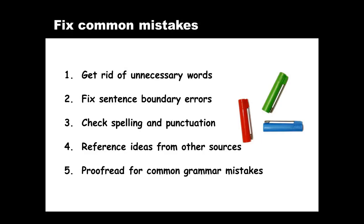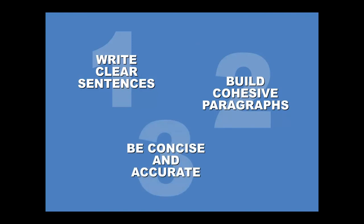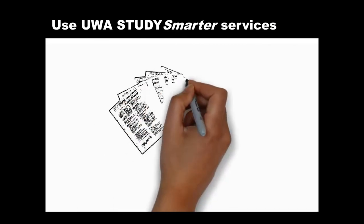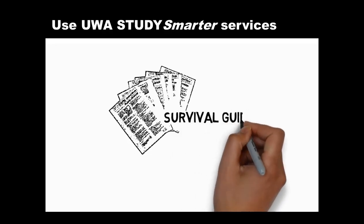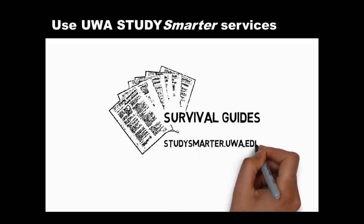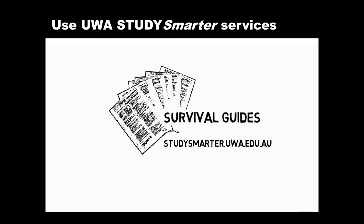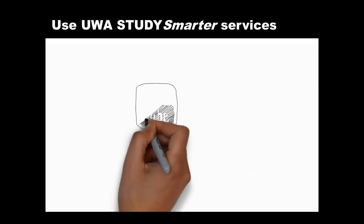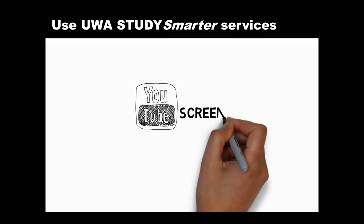In summary, you can make the writing you do for crime and society concise and accurate if you do these things. We hope you've enjoyed this video, the last in a series of three, and that these videos help you write clear sentences, build cohesive paragraphs, and be concise and accurate, so that when you write for crime and society, your papers are easy to read and have impact. There's lots of help available from Study Smarter at UWA. For example, you can download survival guides from our website — these are handy one-page advice sheets on topics that can help you with your studies. You can also get other Study Smarter YouTube screencasts to help with your writing. Good luck with your writing, and see you soon.